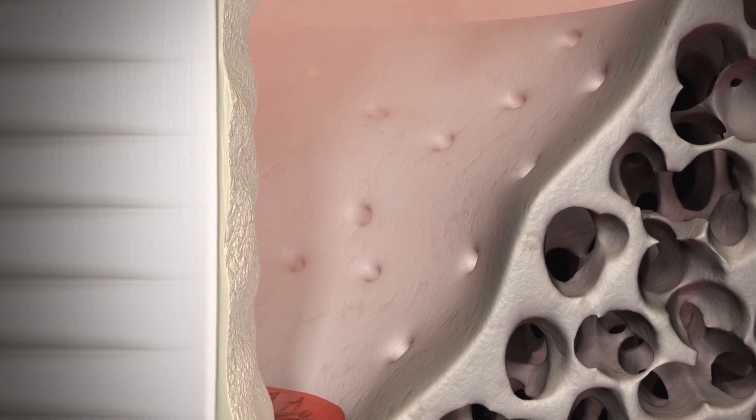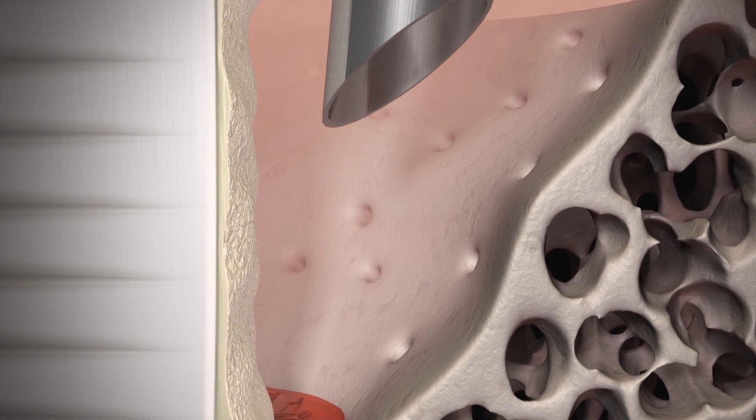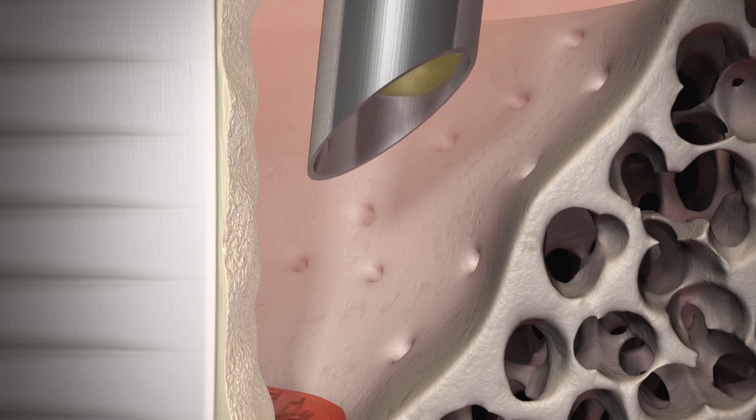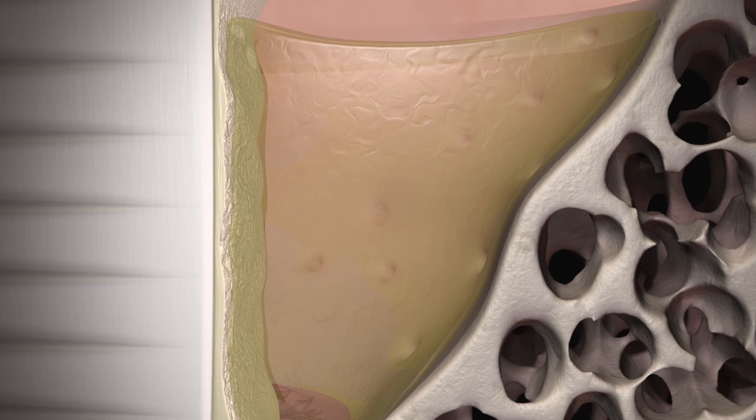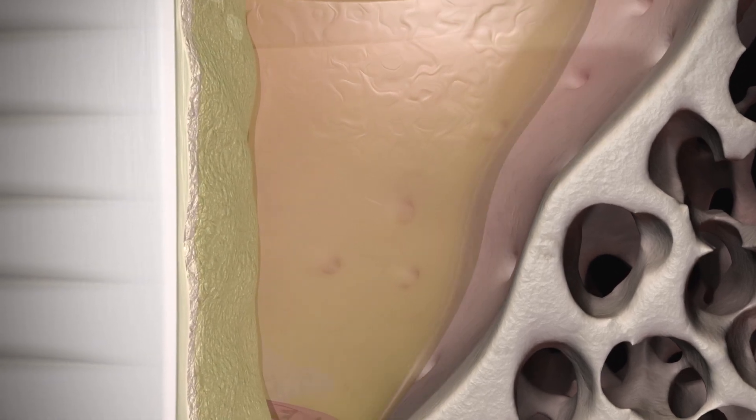After opening the flap and conditioning of the root surface with Straumann Prefgel, Straumann Emdogain is inserted in the periodontal defect and distributed evenly thanks to its gel-like consistency.